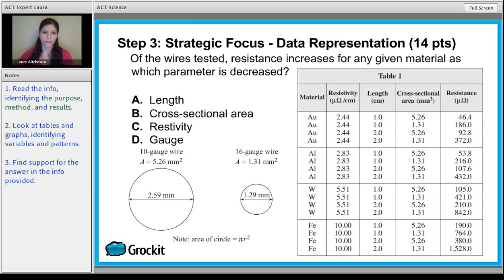Cross-sectional area - let's decrease cross-sectional area. 5.26 to 1.31, that's a decrease. And hey, look at this, resistance increases. Let's check another one: 5.26 to 1.31, resistance goes from 53.8 to 216. That's a huge increase. So that one looks really good.